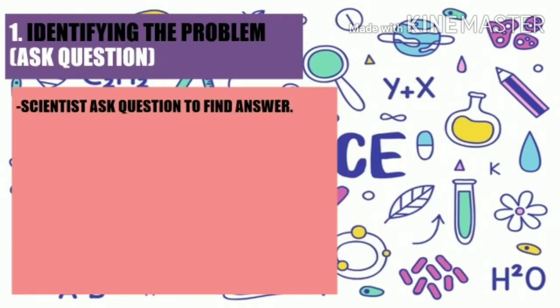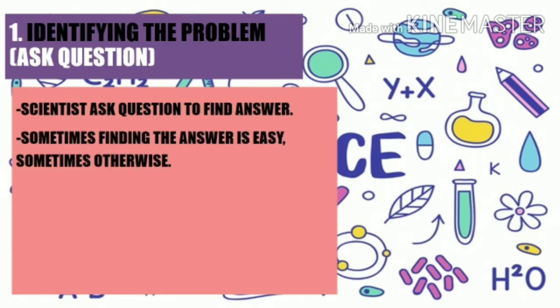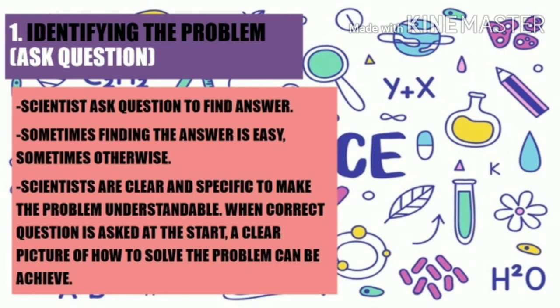In identifying the problem, a scientific question is being asked to find an answer. Sometimes finding the answer is easy, sometimes otherwise. Scientists are clear and specific to make the problem understandable. When the correct question is asked at the start, a clear picture of how to solve the problem can be achieved.